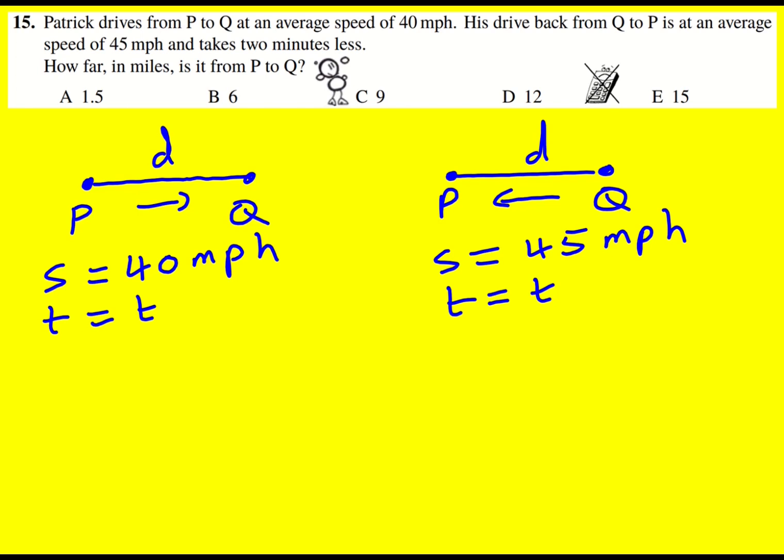Now we just need to be a bit careful because we're working in miles per hour and now we've got minutes. So I need to change minutes into hours or change miles per hour into miles per minute. I'm going to change two minutes into hours, so it's going to be 2 over 60. To go from minutes to hours, you divide by 60, so it's going to be 1 over 30 hours. Therefore the time is going to be T minus 1 over 30. Be really careful, make sure that you convert it.